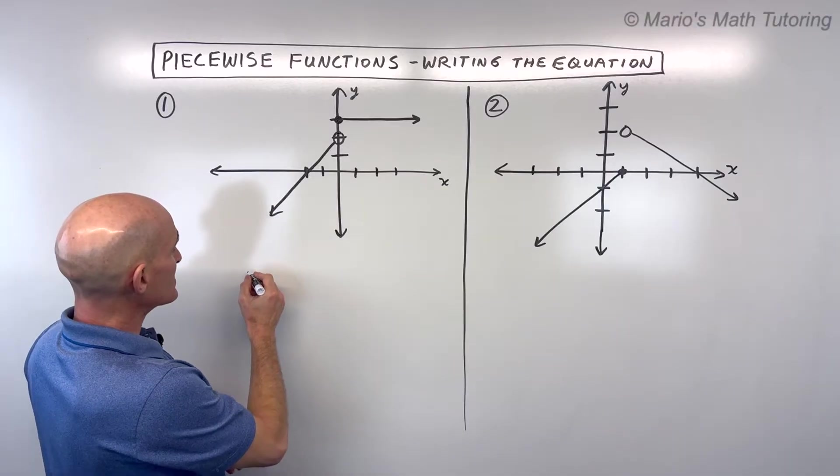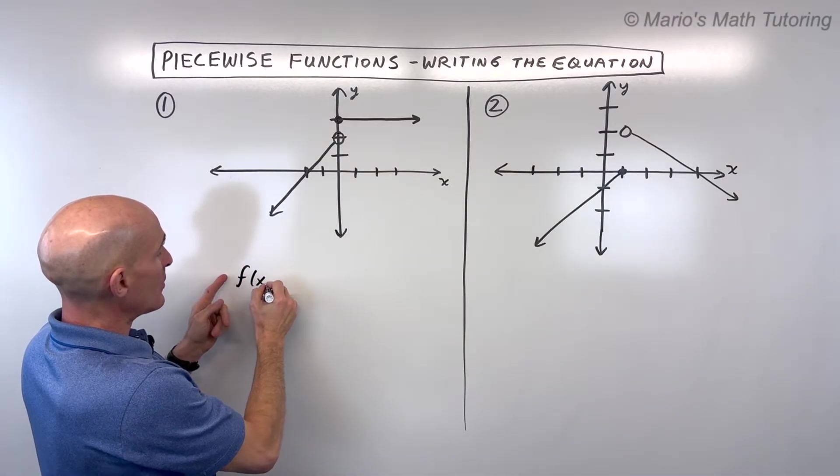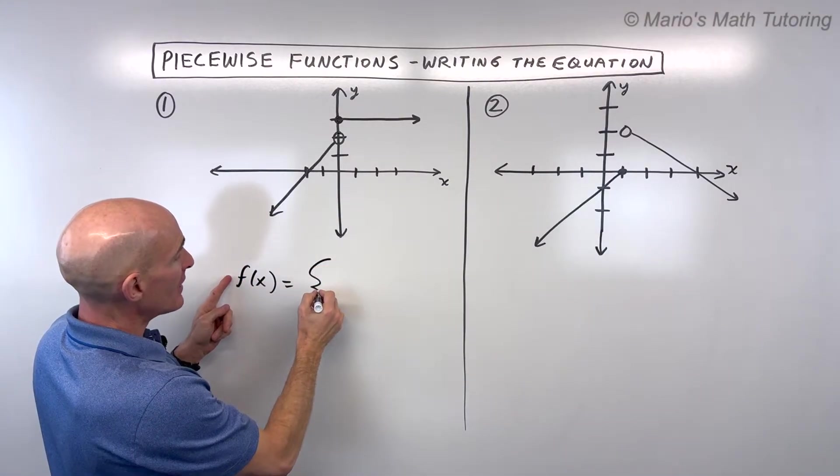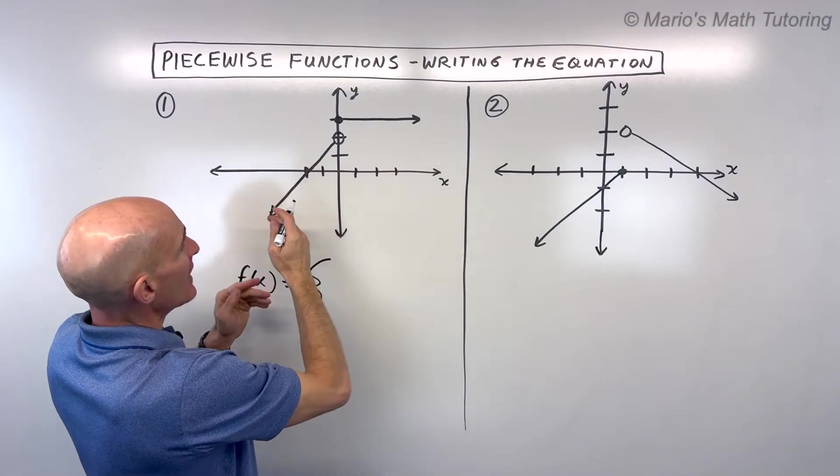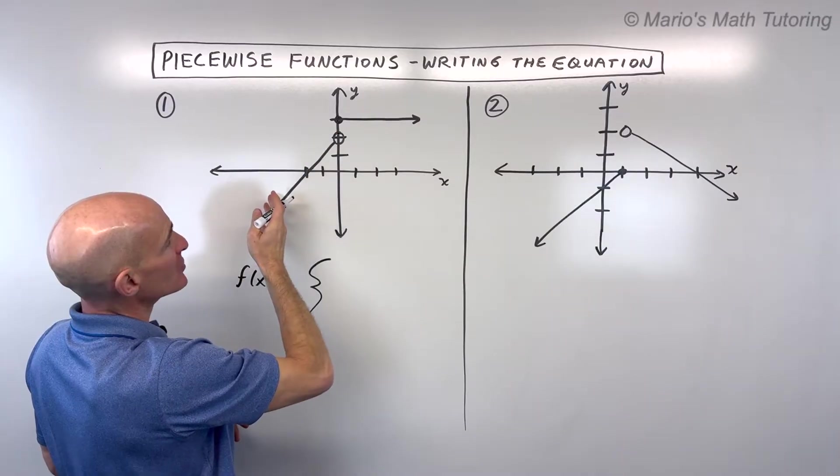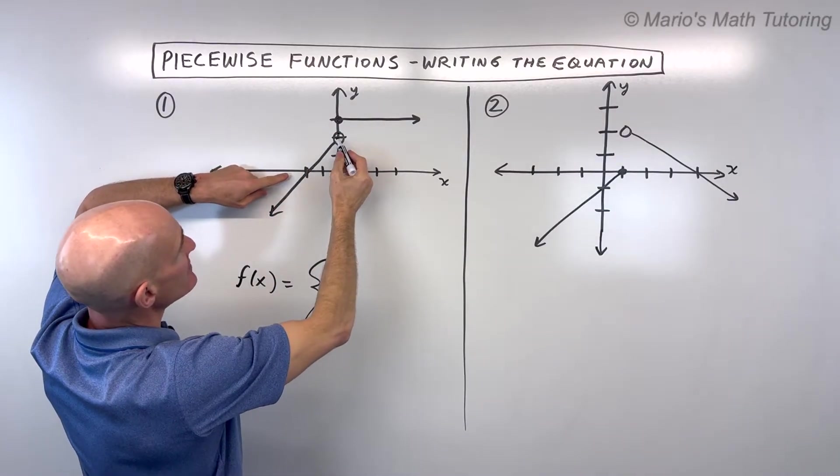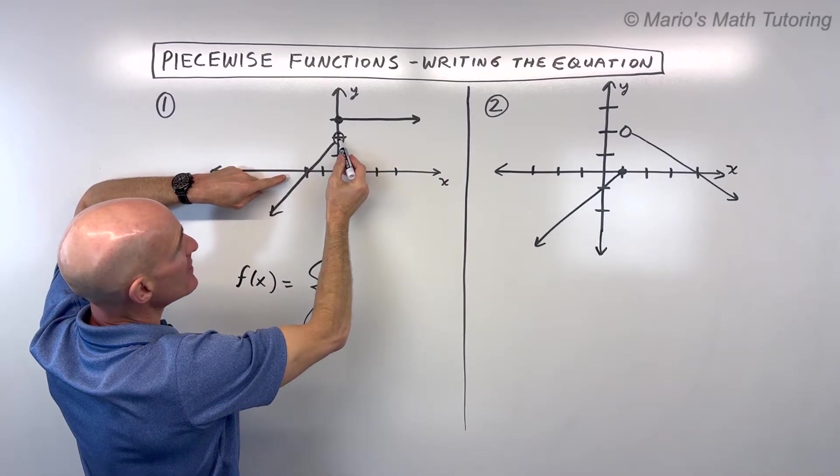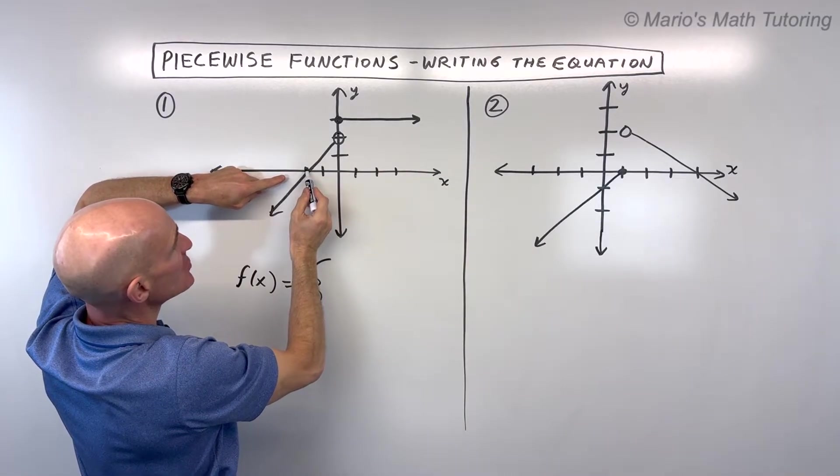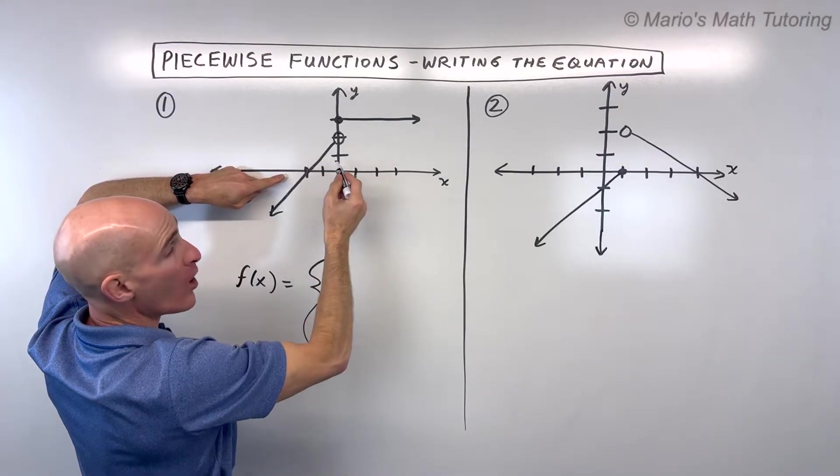So what we're going to do is write this as f(x), or you could say y equals, and we're going to write this in two parts. I like to work from left to right, and this first graph that we're coming into contact with is this diagonal line. Notice that this has a y-intercept of 2 and a slope of rise 2 run 2, that's a slope of 1. So this equation would be 1x + 2.